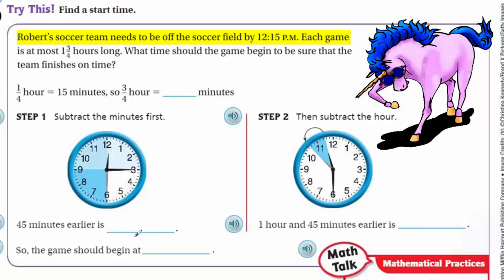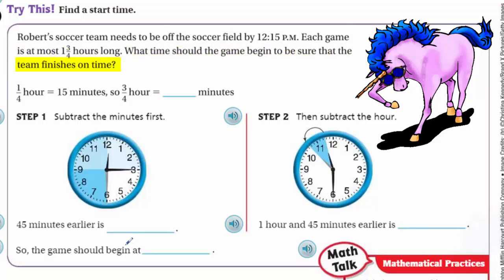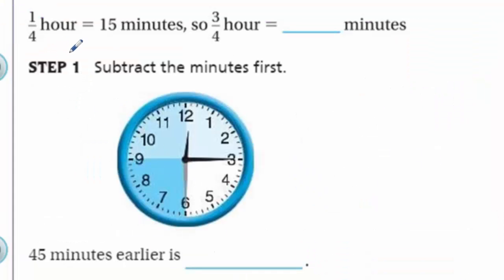Robert's soccer team needs to be off the soccer field by 12:15 PM. Each game is at most one and three-quarter hours long. What time should the game begin to ensure the team finishes on time? This is different - we don't have a start time. We only have the maximum game length and the ending time: 12:15 PM.